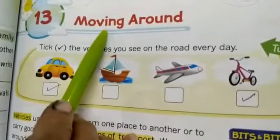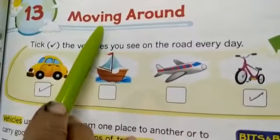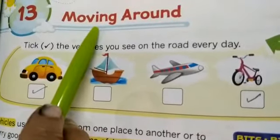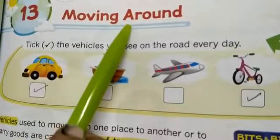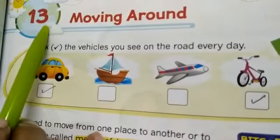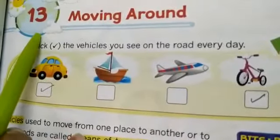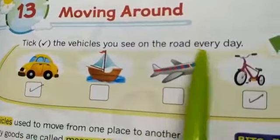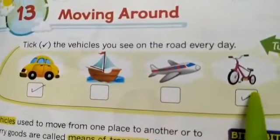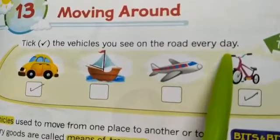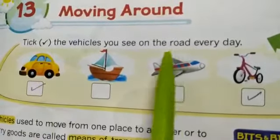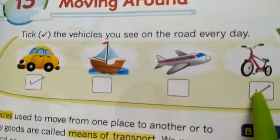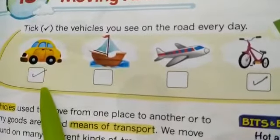We are going to start our second unit. You will see some pictures on the road — tick the vehicles you see on the road every day. First picture is of a car, ship, aeroplane and cycle. You will tick on the pictures which move on the road.